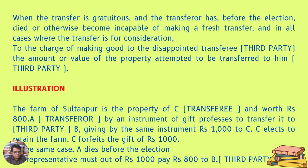In all cases where the transfer is for consideration, the transferor is charged with making good to the disappointed transferee — namely the third party — the amount or value of the property attempted to be transferred to him. Illustration: The farm of Sultanpur is the property of C, the transferee, and worth rupees 800. A, the transferor, by an instrument of gift professes to transfer it to third party B, giving by the same instrument rupees 1000 to C. C, the transferee, elects to retain the farm; C therefore forfeits the gift of rupees 1000. In the same case, if A dies before the election, his representative must out of rupees 1000 pay rupees 800 to B, the third party.